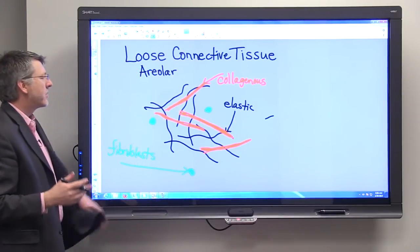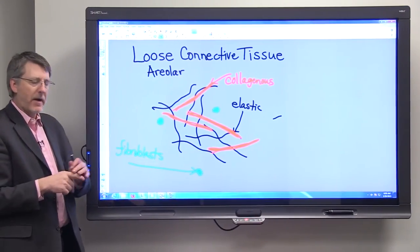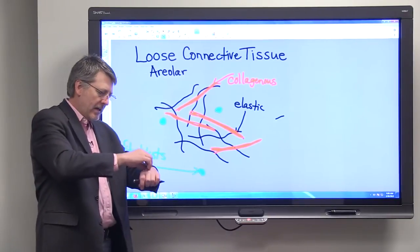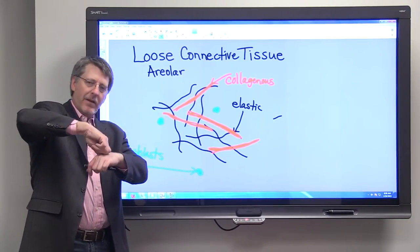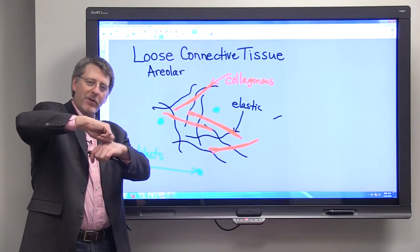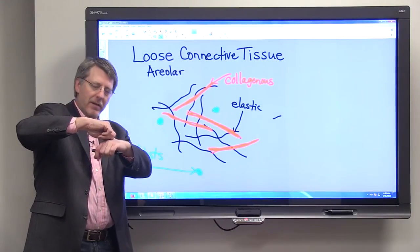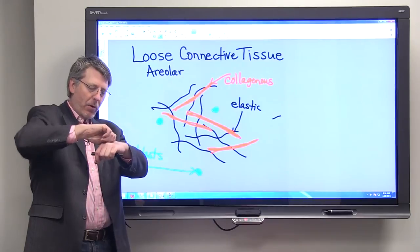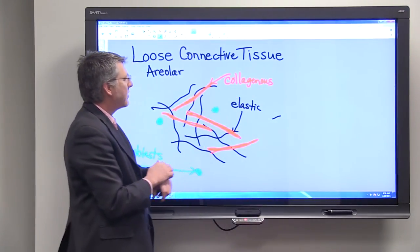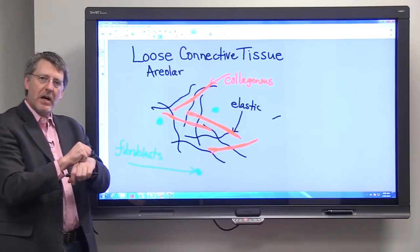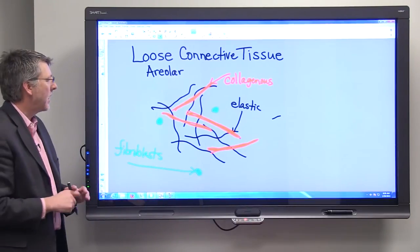The collagenous fibers sort of balance out the elastic fibers. If you take your skin and you pull on it, you'd have to exert a tremendous force in order to pull that skin completely away. That's because those collagenous fibers in there are very tough and they help hold it all together.